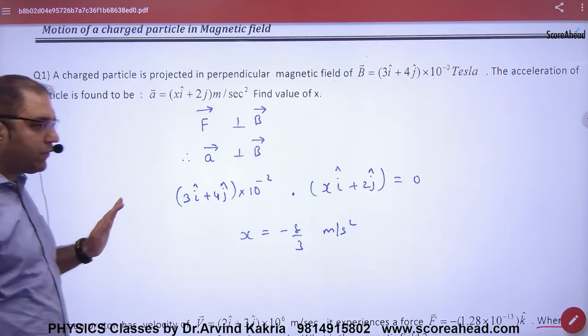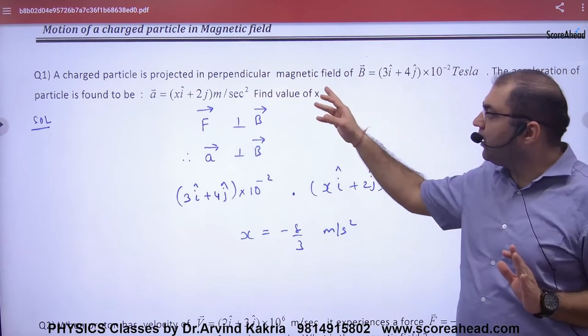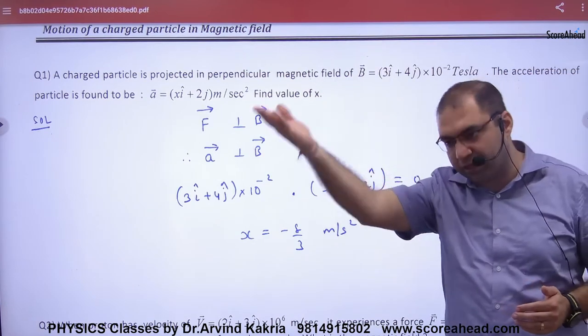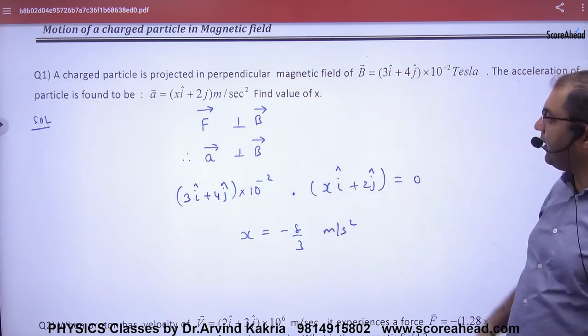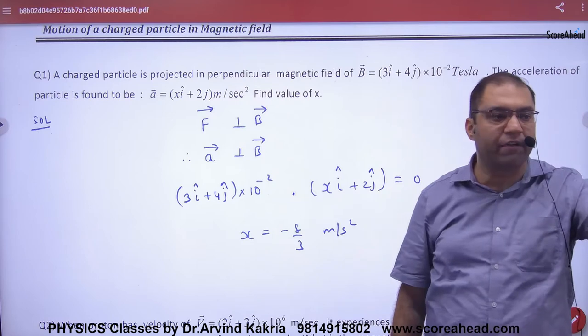As for this question, a charged particle is projected in a perpendicular magnetic field, so it will move in a circle. B vector is given. Acceleration of particle is equal to all vectors. You have to remove x.